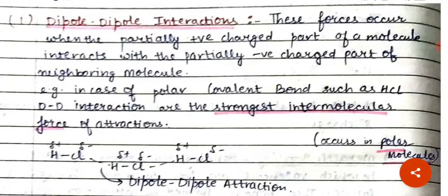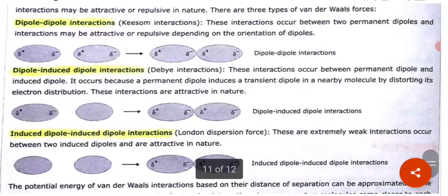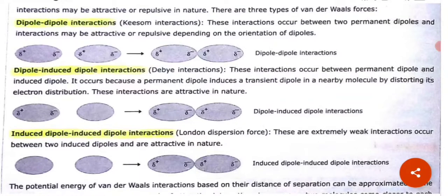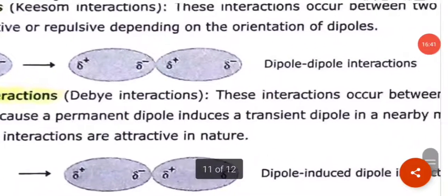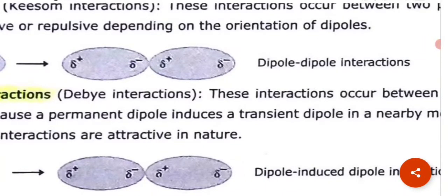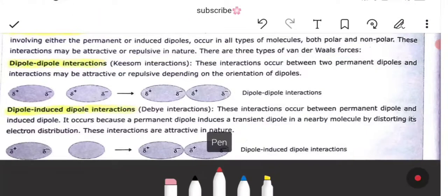Dipole-dipole interactions occur when the partially positive charged part of a molecule interacts with the partially negative charged part of a neighboring molecule. In the case of polar covalent bonds such as HCl, dipole-dipole interactions are the strongest intermolecular force of attraction — they occur in polar molecules. These interactions occur between two permanent dipoles and can be either attractive or repulsive depending on the orientation of the dipoles. They are also short range in nature.